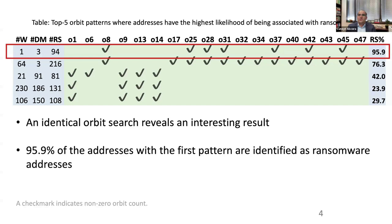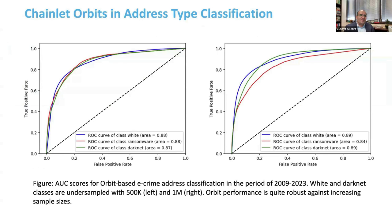We also develop graph neural networks and topological data analysis methods. Orbits is also a topological method, but we develop more complex methods for other problems as well. Here is my AUC plot. This plot shows that our models work with great efficiency. On the left plot, I am showing you the classification when we use only around 500,000 white addresses. On the right, I am showing when we increase the scale. The AUC — the area under the curve for precision-recall — is quite good.